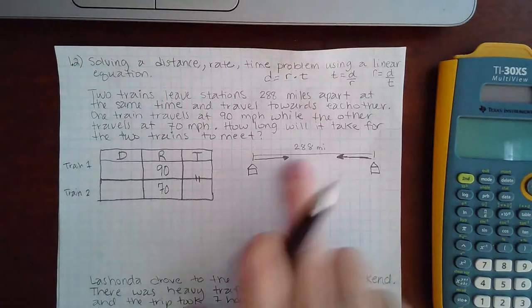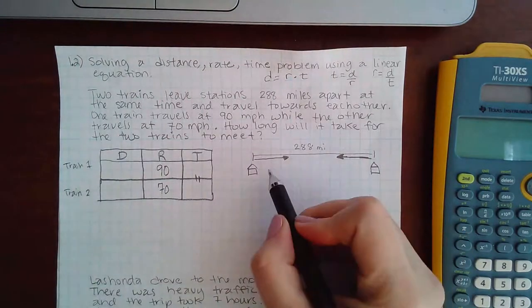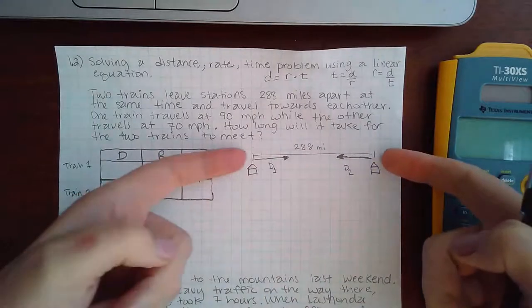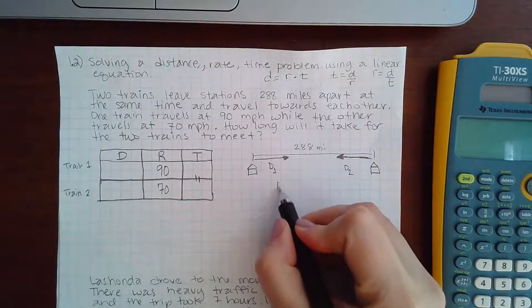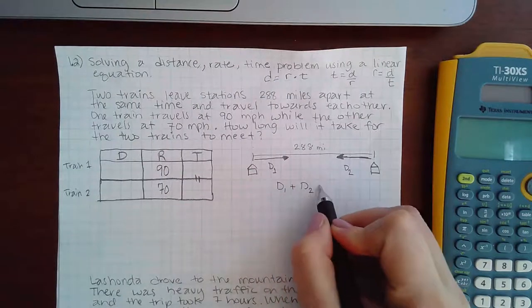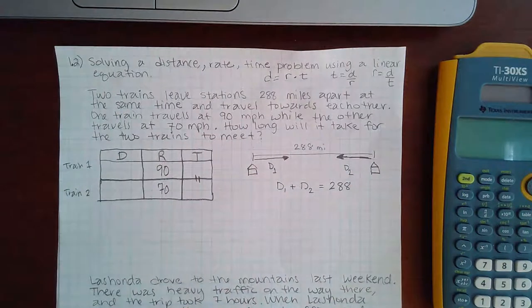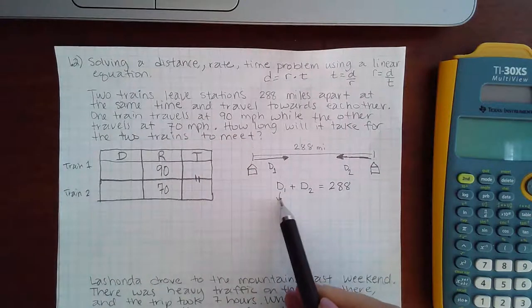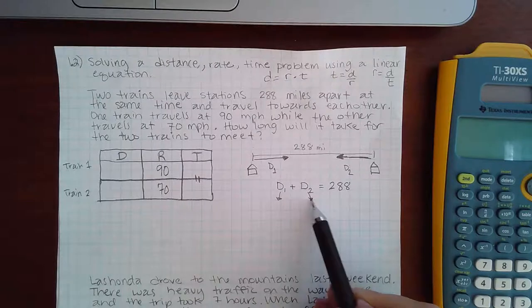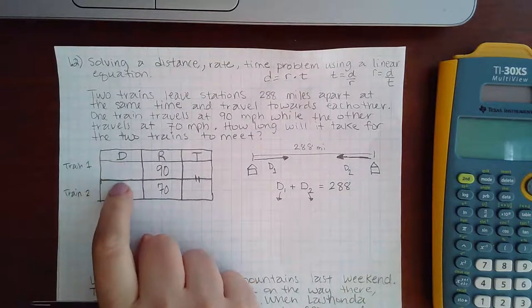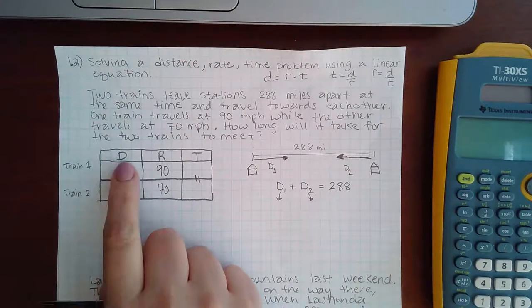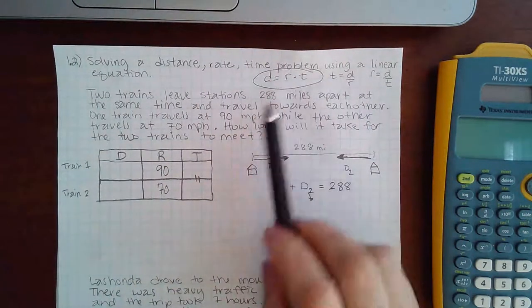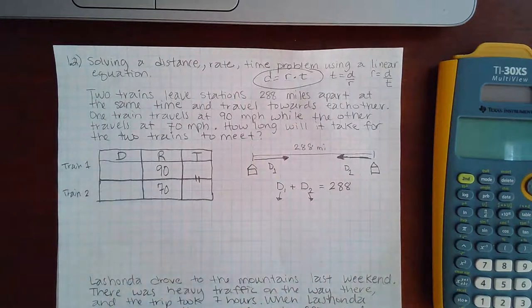Since I do have some extra information about the distance, we know that the distance of train one and the distance of train two, if they're both going in this direction and then they meet, that means the distance of train one plus the distance of train two should equal this 288 miles. So then what we need to know is the expression to use for this distance and the expression to use for this distance. So that means I need to fill in these two boxes. What formula do I need to figure out what D is? This would be the formula that I need.